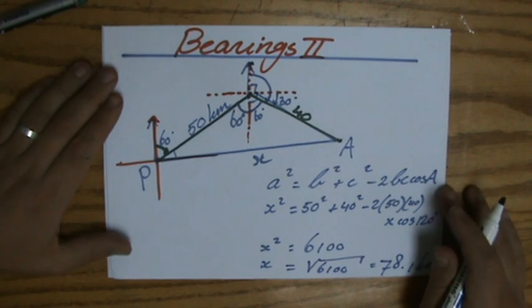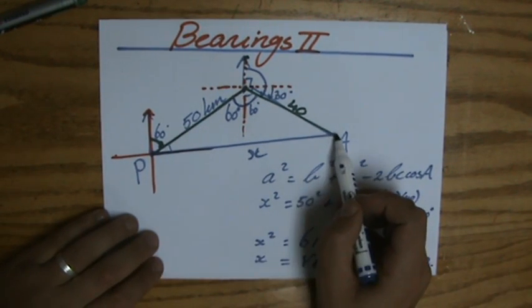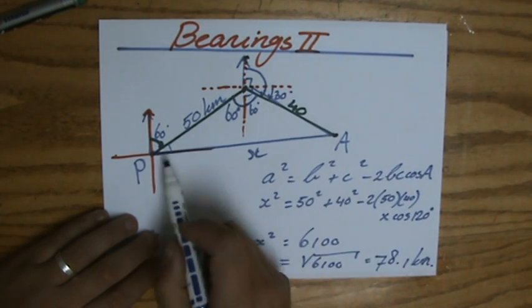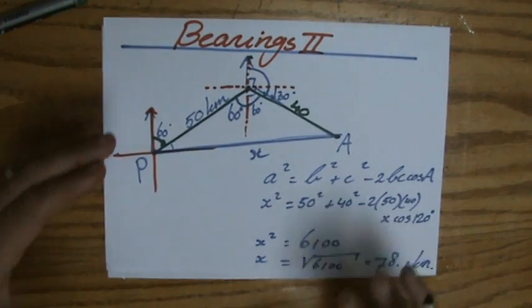That is going to give me 78.1 kilometers. So that is going to be my answer. 78.1 kilometers, which is the distance from where the ship sets for anchor and the port. And I found that by using the cosine rule.